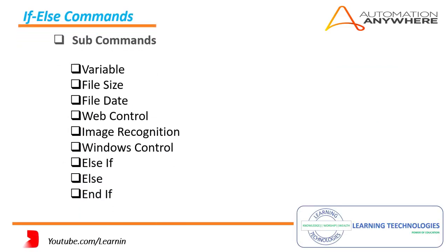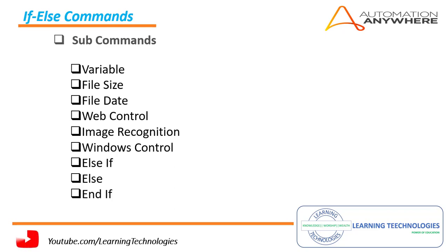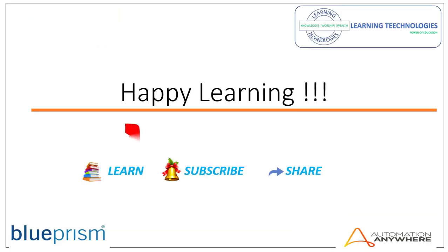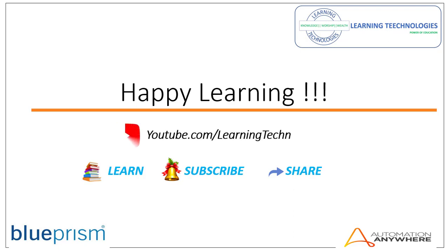In the next session we will see the remaining sub commands like variable, file size, file date, web control, image recognition, windows control, else if, else, and end if commands. Thank you for watching Automation Anywhere RPA tutorials. If you have any queries related to this topic, please post them in the comment section. Till then, bye bye — we'll see you in the next session.